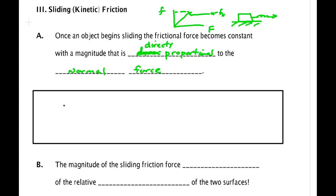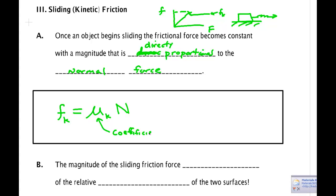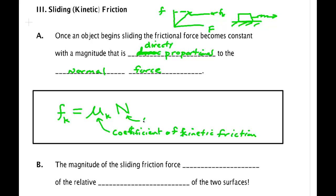That means that the kinetic friction force F sub K is equal to some constant times the normal force. This constant is the coefficient of kinetic friction, and the other term is the magnitude of the normal force.